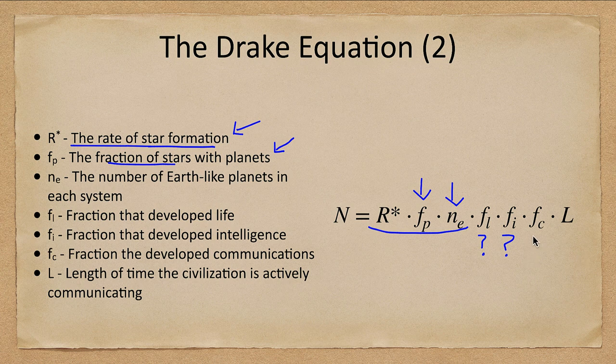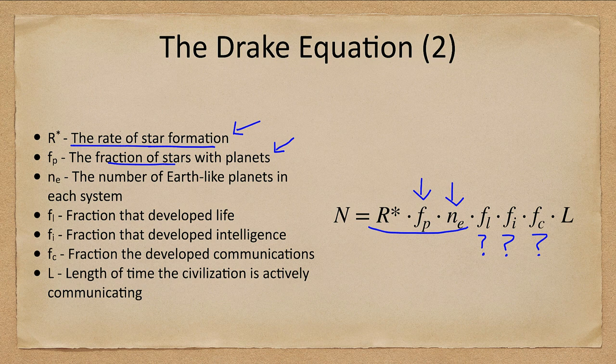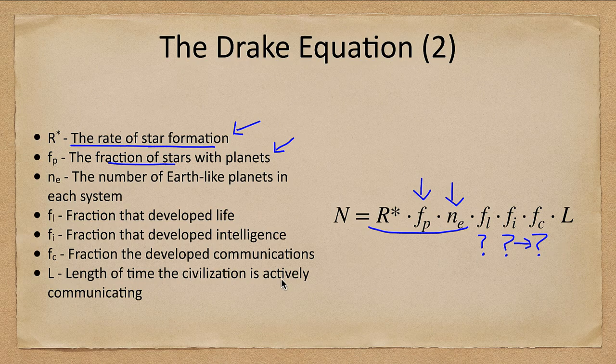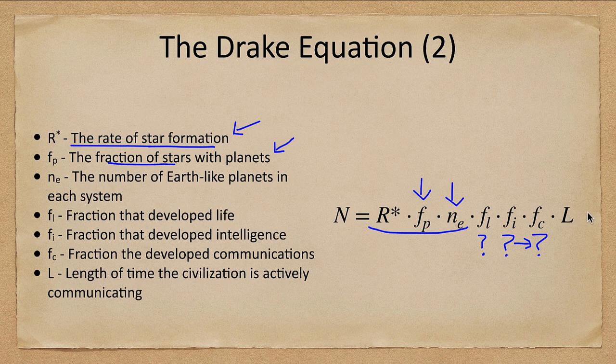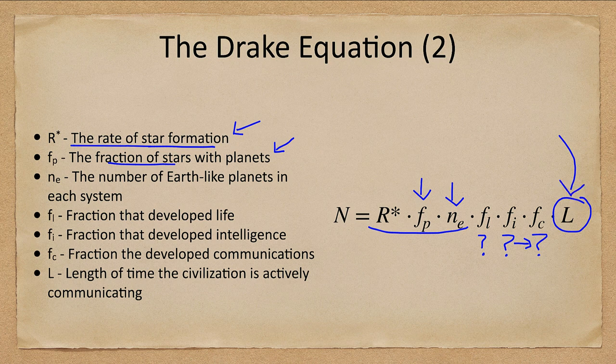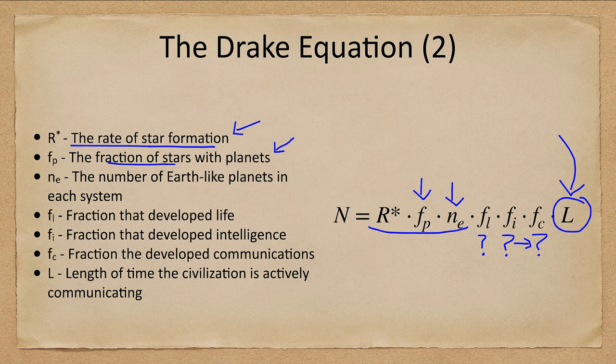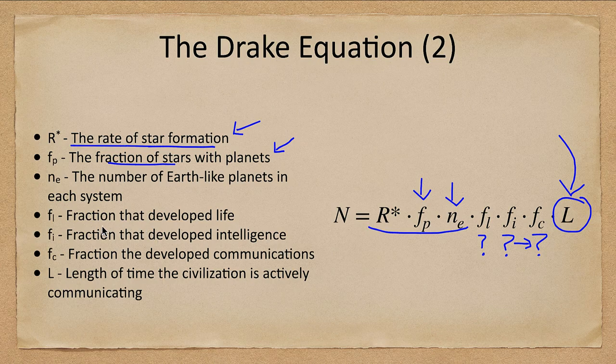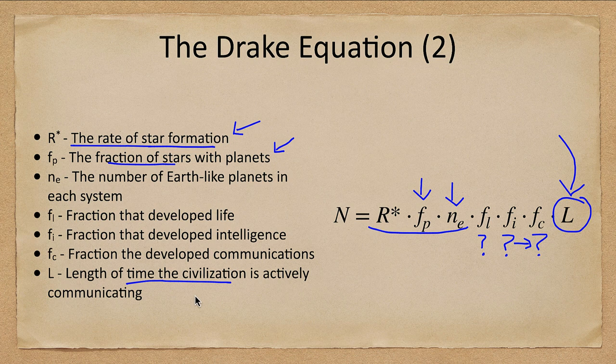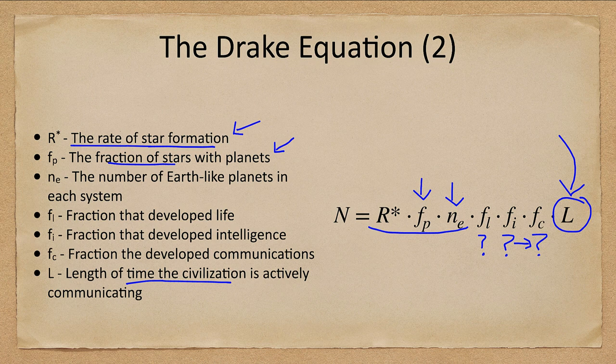And then fc, the fraction that develop communications. How many of those develop some kind of communications? So in that case, it would be probably radio telescopes. Do all intelligent civilizations naturally develop radio communications or is it a rarity? And that's another good question. And the biggest question we have here is this one. L, what is the length of time that a civilization is actively communicating? We've developed radio around a hundred years ago. So technically, we've been doing maybe a hundred years, a very small fraction of our civilization. Before that, we would not have been able to detect or send messages. So how long does this last? How long does a civilization last? Do they last millions of years? In which case, there could be a lot of them there. Do they last hundreds of years? In which case, there could be very few.